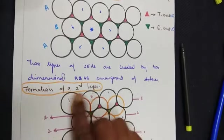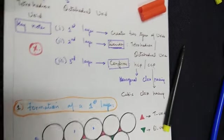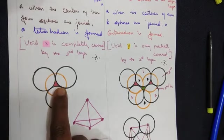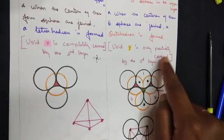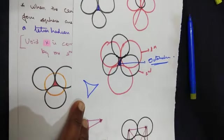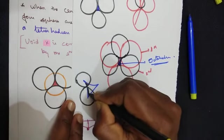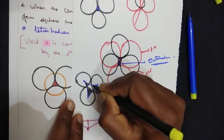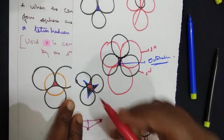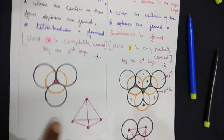In the formation of the second layer, we understand which voids are tetrahedral and which are octahedral. Void X is completely covered by the second layer — that is the tetrahedral void. Void Y is only partially covered — that is the octahedral void. If we draw one sphere, it covers only one part of the space; another sphere covers another part; one more sphere covers yet another part. Still a certain part of the void is left as it is. This void is called an octahedral void.